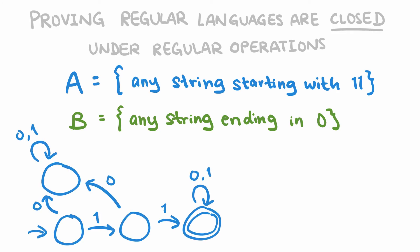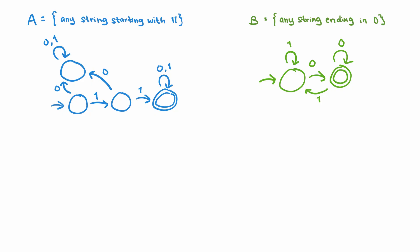Here is a DFA that recognizes A, and here is a DFA that recognizes B. Now, here is how we can construct a new finite automaton that recognizes their union.